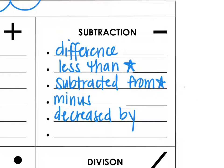For subtraction, words like difference, less than, subtracted from, minus, or decreased by are words that indicate subtraction. Watch out for phrases like less than and subtracted from. Those are what we like to call turnaround phrases, which we'll talk about momentarily.